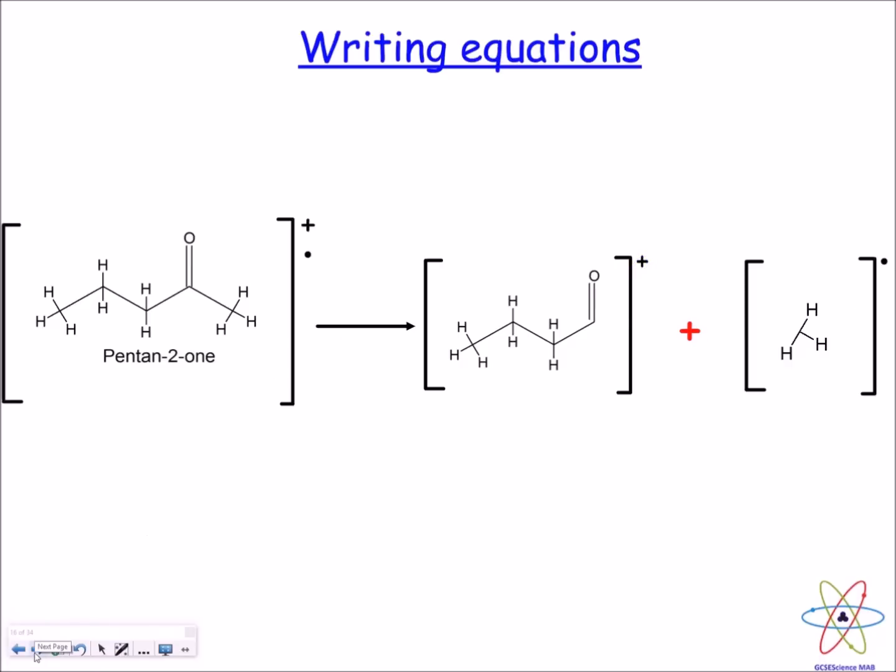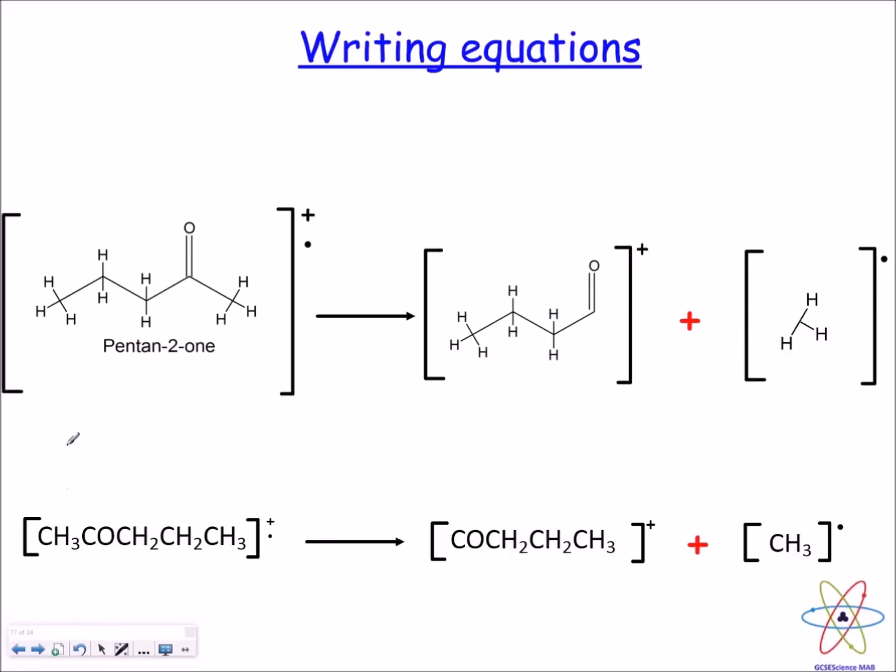To write an equation, it's quite straightforward. You just write the structural formula. So you've got your molecular ion here, fragmenting into these two fragments. You can also just write the molecular formula, so count up all the number of carbons, followed by the number of hydrogens, and so on. That's also acceptable.